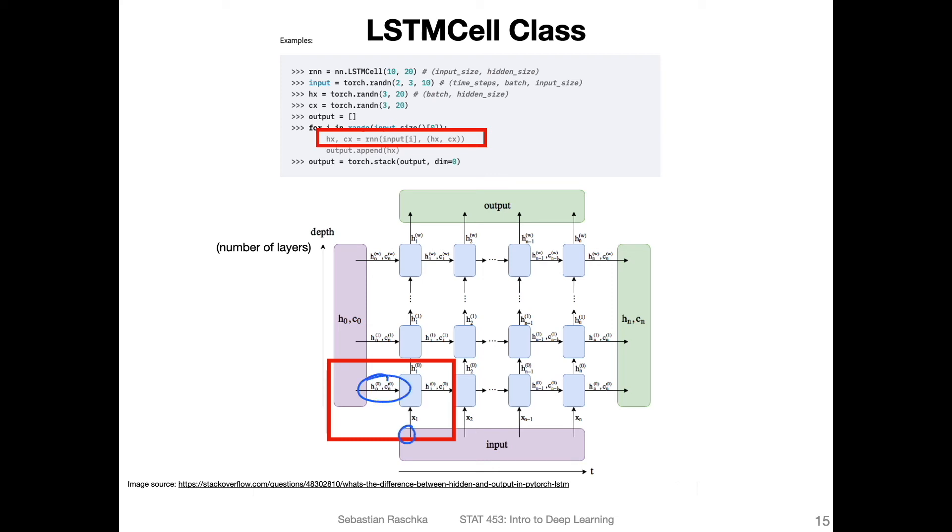So it only receives one character as the input, then for the one layer, the initial hidden and cell state, and it only outputs one output here. And then the hidden and cell state for the next state. So why that is more useful is, in a way for computing the loss, essentially that you can get one thing at a time, essentially, instead of running the whole thing.